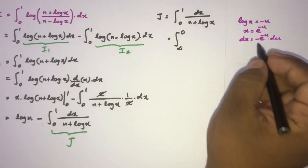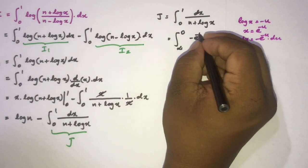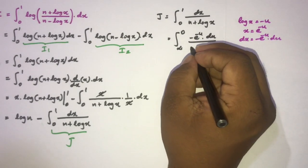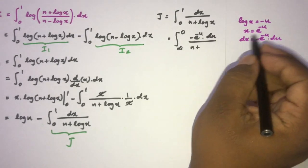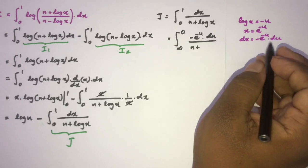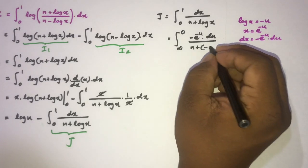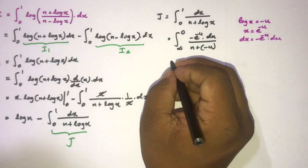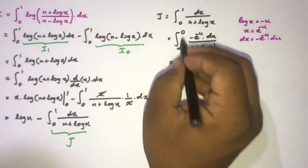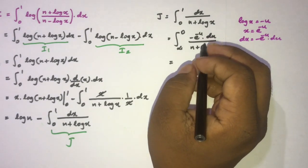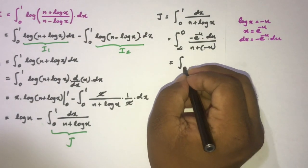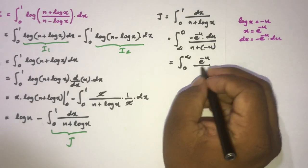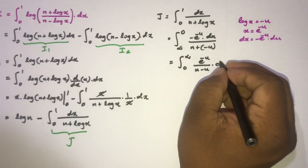After substitution, the integral becomes minus e to the minus u du over (n minus u). Changing the limits reverses the sign, so the minus cancels and we have the integral from 0 to infinity of e to the minus u over (n minus u) du.